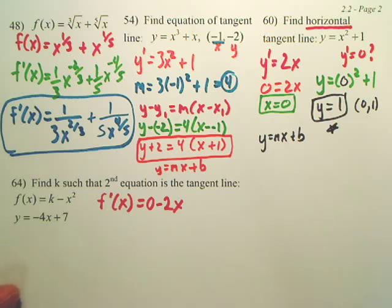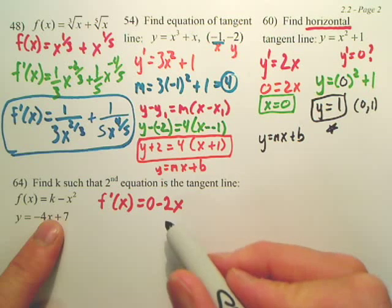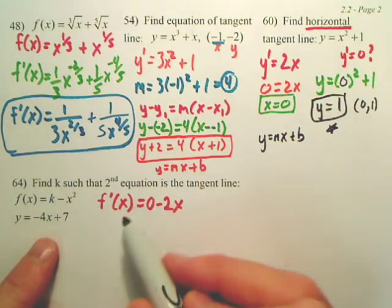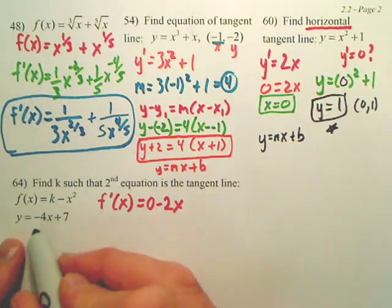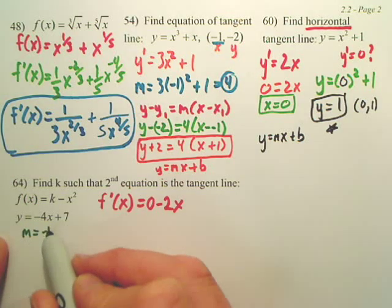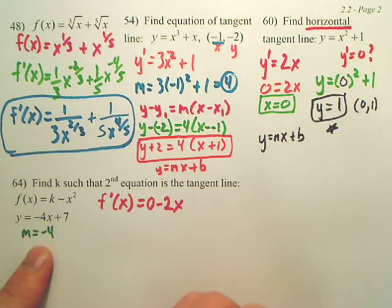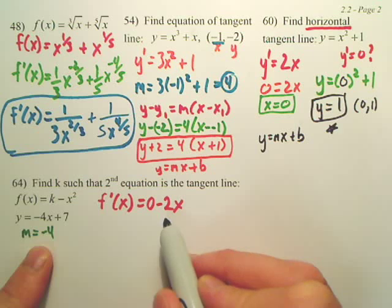Okay. So I derived this original equation. Now, what do I want my derivative equaling? Well, what was the slope? What's the slope here? Is it m negative four for my tangent line? So do I want to find out where my derivative equals negative four?